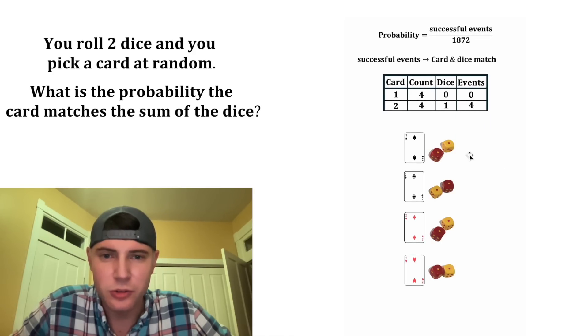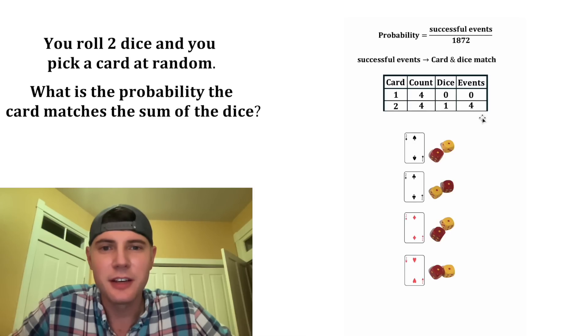Here's the 4 events that would match the 2 card. You have 2 of spades with the snake eyes, 2 of clubs with the snake eyes, 2 of diamonds with the snake eyes, or 2 of hearts with the snake eyes. So these are the 4 successful events for the 2 card.